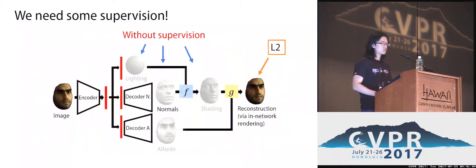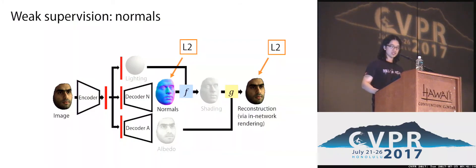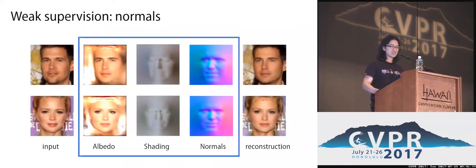So in this paper, we propose a form of weak supervision in the form of specific guiding losses. First, we want to bias the normal map estimation towards the shape of the human face, so we introduce a guiding loss for this goal. We use the distance between the normal map estimated by the network and the normals given by a morphable model as our guiding loss. With this training signal, the network is able to regress to the normals of the morphable model — the pose and expressions are correct. However, the recovered shape does not capture the identity of the subject.